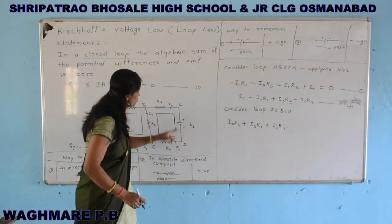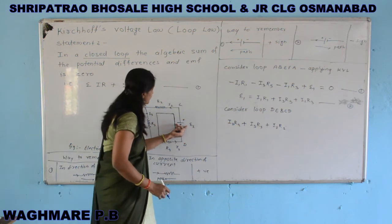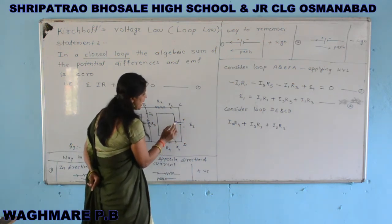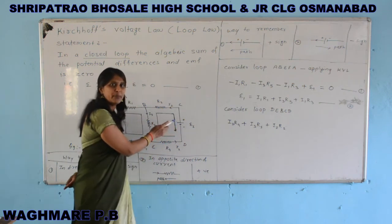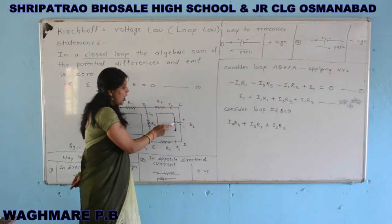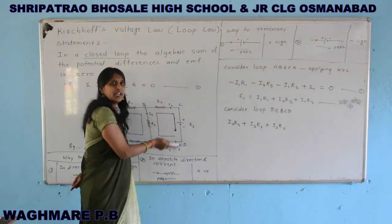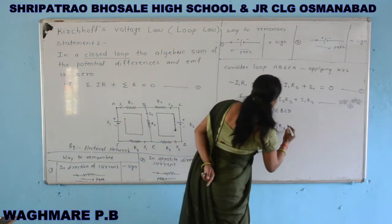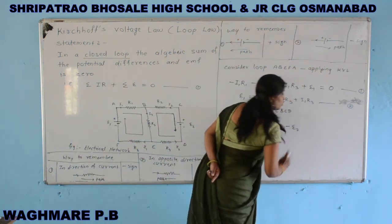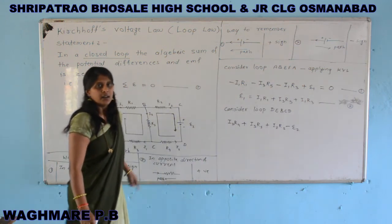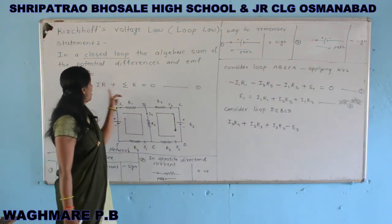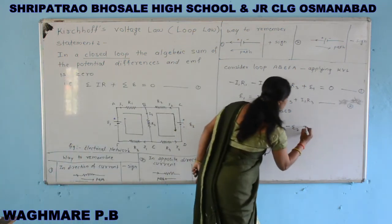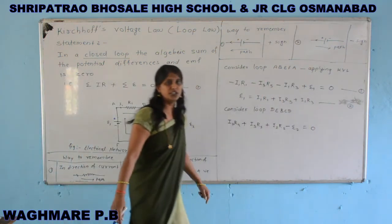Traversing from C to B, cell E2 is encountered. We traverse from the positive terminal to the negative terminal, so the EMF is taken as negative: minus E2. By Kirchhoff's voltage law, the algebraic sum equals zero.